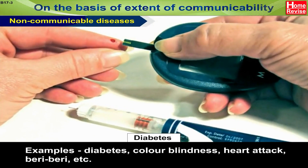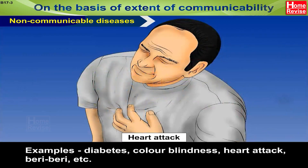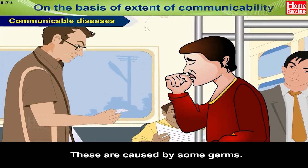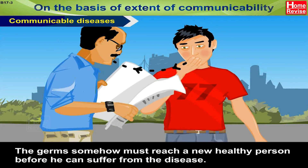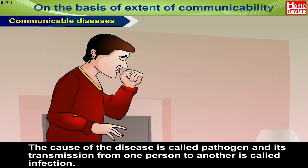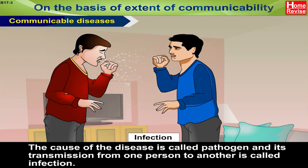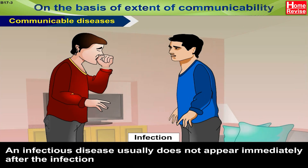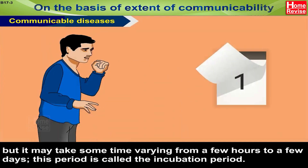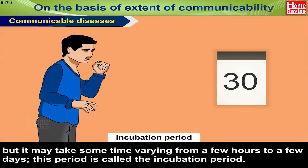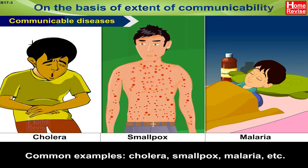Examples of non-communicable diseases are diabetes, colorblindness, heart attack, beriberi, etc. Communicable diseases are caused by some germs; the germs must somehow reach a new healthy person before he can suffer from the disease. The cause of the disease is called a pathogen, and its transmission from one person to another is called infection. An infectious disease usually does not appear immediately after infection but may take some time, varying from a few hours to a few days. This period is called the incubation period. Common examples are cholera, smallpox, and malaria.